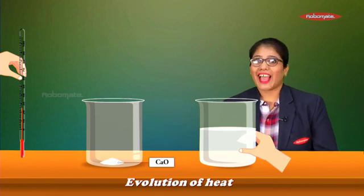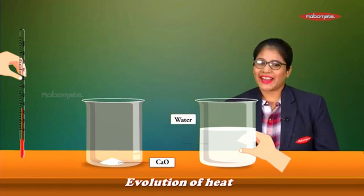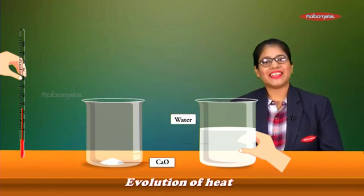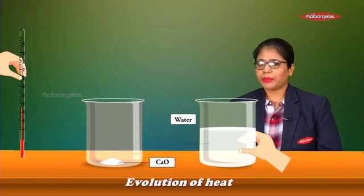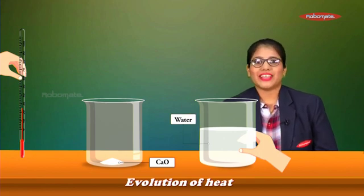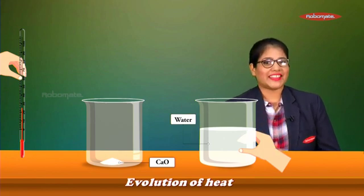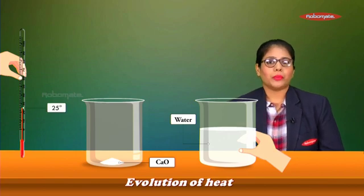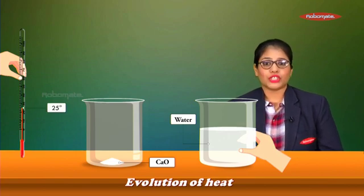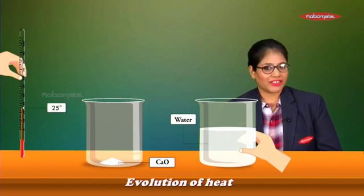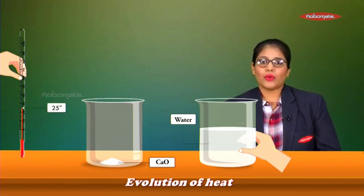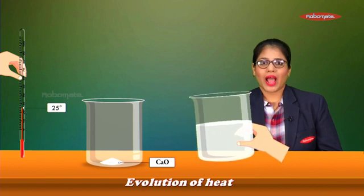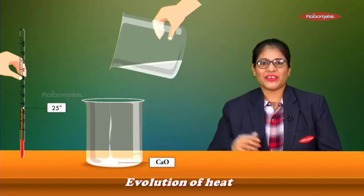We have a beaker containing calcium oxide and another beaker containing water. We're keeping a thermometer ready to check the temperature of the reaction. Right now the thermometer measures 25 degrees Celsius.